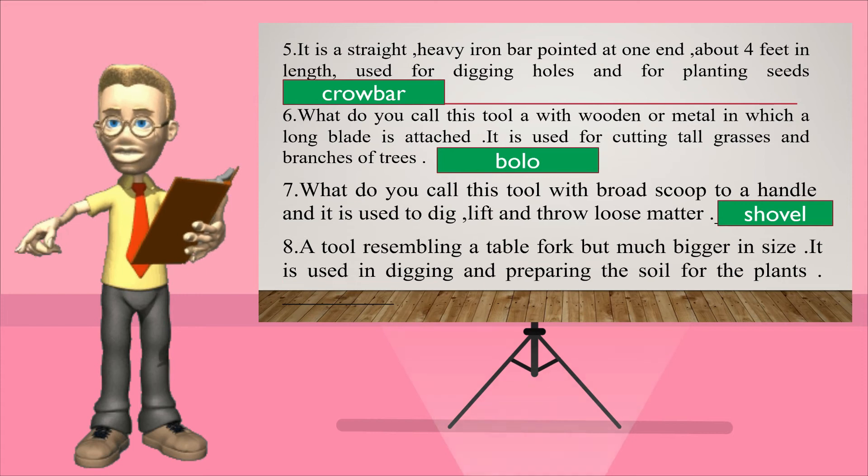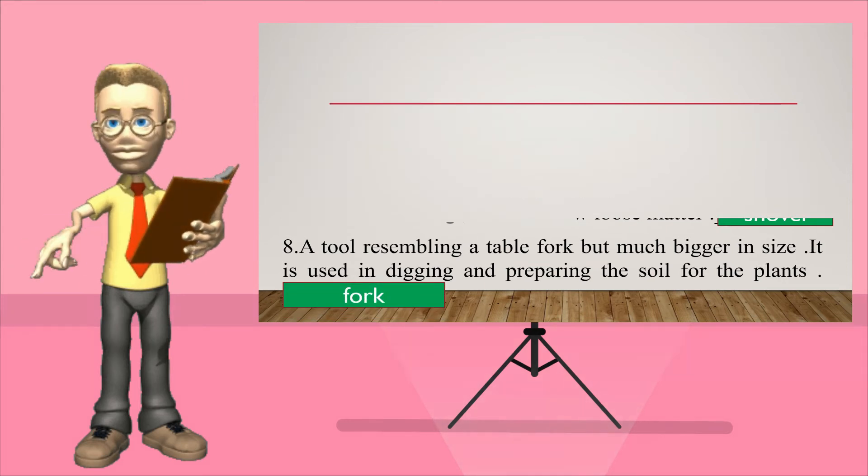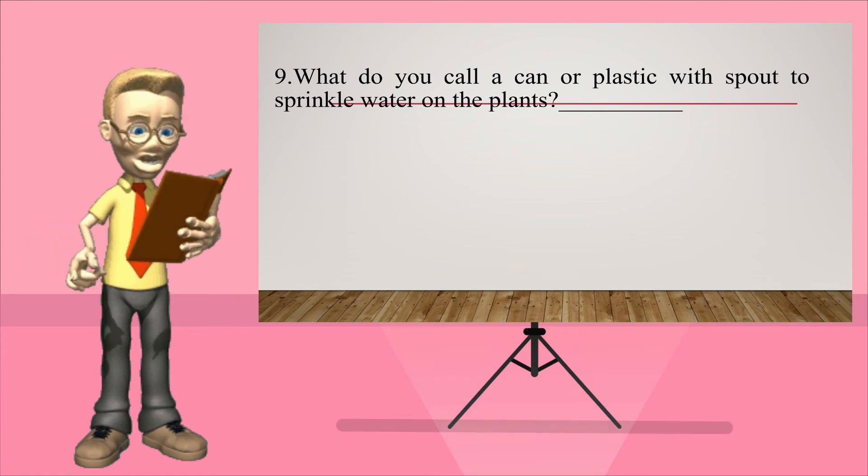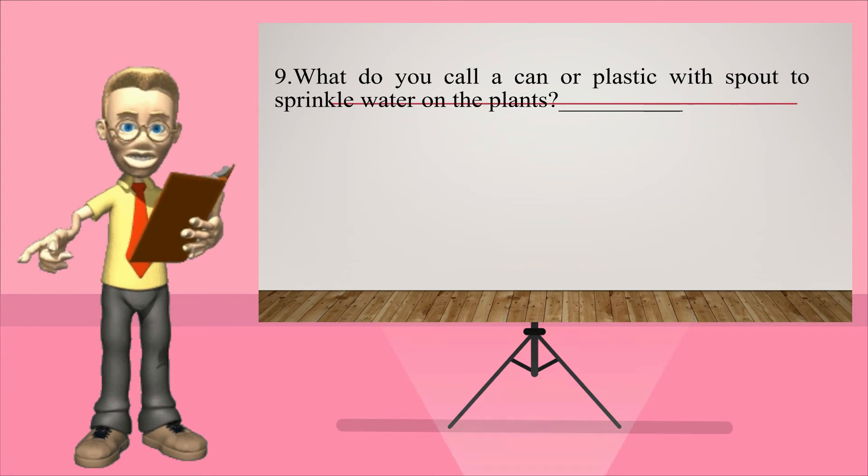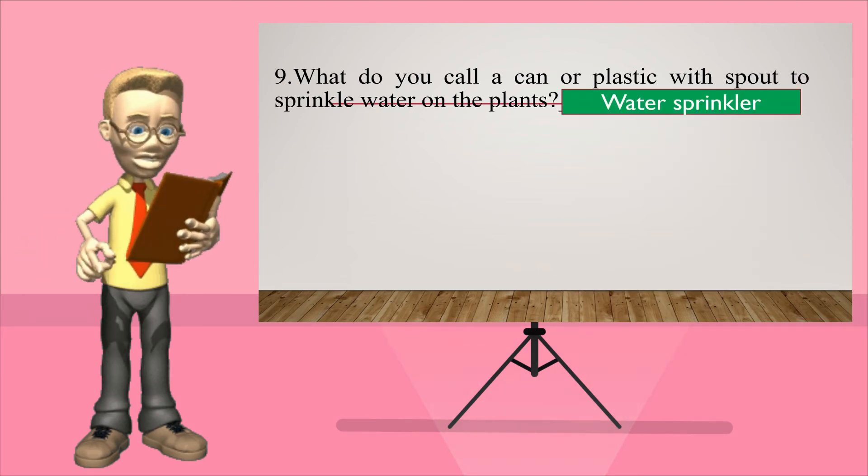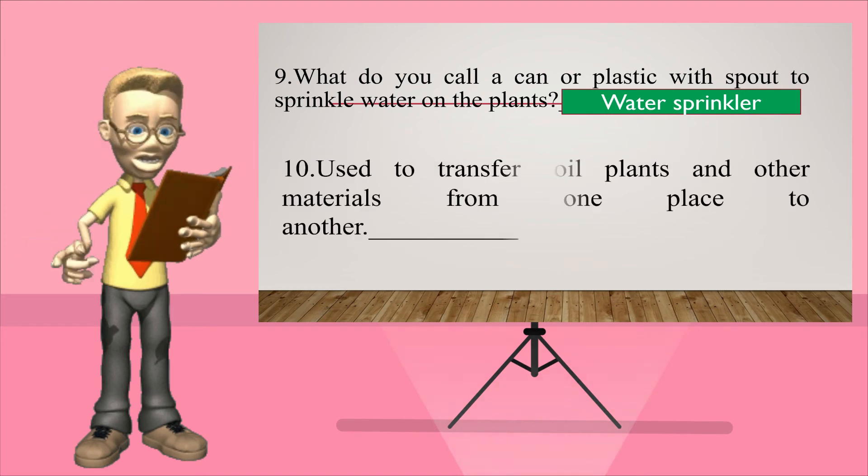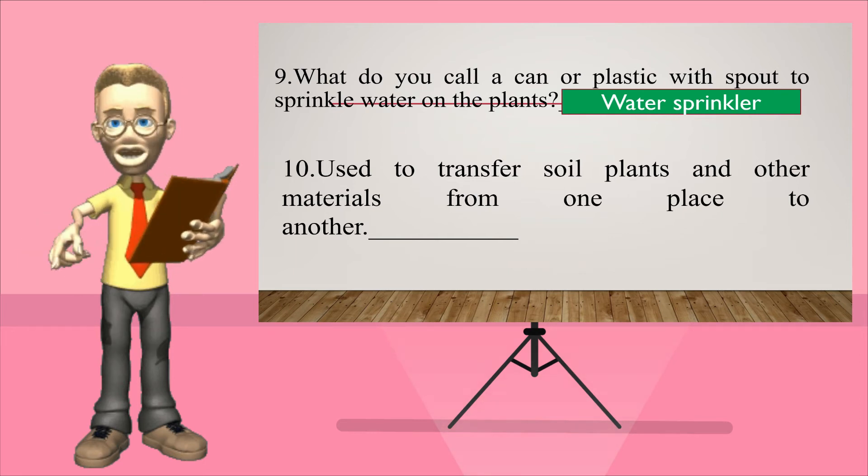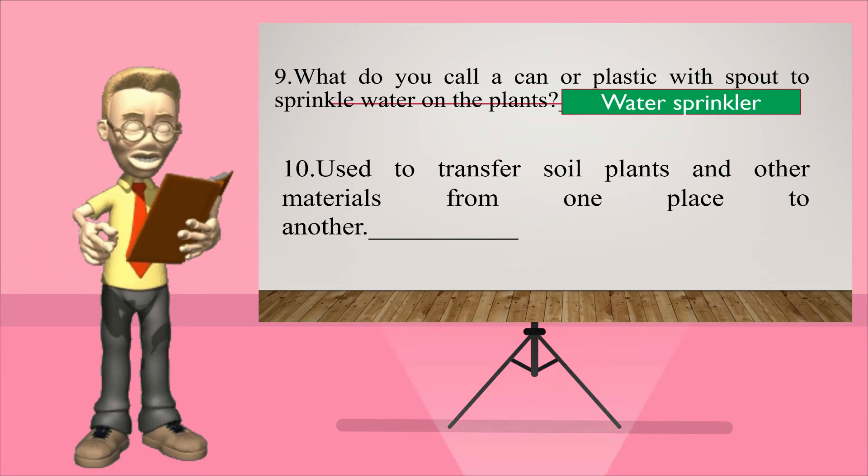Number seven, what do you call this tool with a broad scoop attached to a handle and it is used to dig, lift and throw loose matter? The word is shovel. Next, a tool resembling a table fork but much bigger in size. It is used in digging and preparing the soil for the plants. You are correct, the word is fork. Next, what do you call a can or plastic with a spout to sprinkle water on the plants? The tool is water sprinkler. Next, it is used to transfer soil, plants and other materials from one place to another. You are right, the word is wheelbarrow.